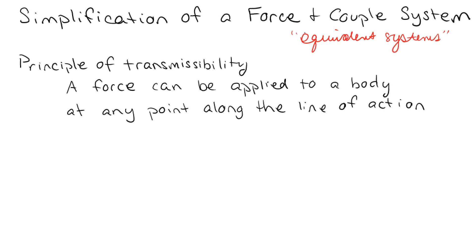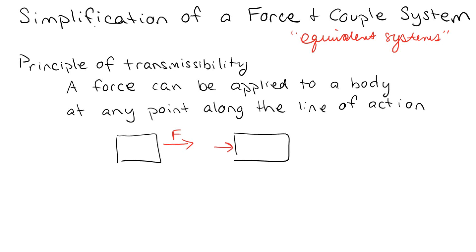The principle of transmissibility basically says that a force can be applied to a body at any point along the line of action. So that means if I have a force here, there's really no difference between a force pulling on that box, or pushing on that box, or finding a little spot in the middle, assuming these are all along the same line. The sum of the forces in the x direction along that particular axis is going to be F.